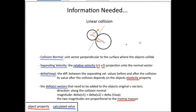Before I start the rotational collision, here is a recap of how the linear one works, because I want to get an overview of what variables I need to implement the equations for simulating the collision. The first thing I want to know is the collision normal, which is the unit vector perpendicular to the surface where the two objects collide.